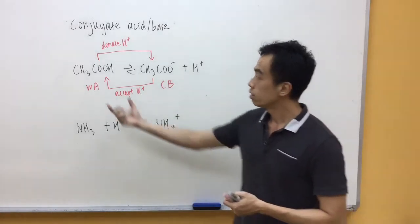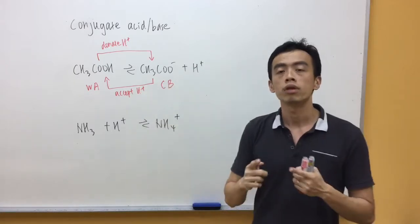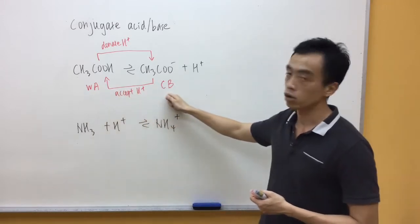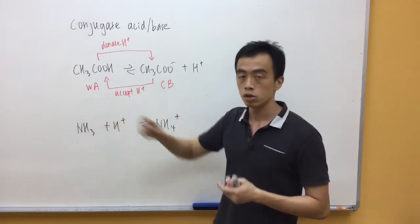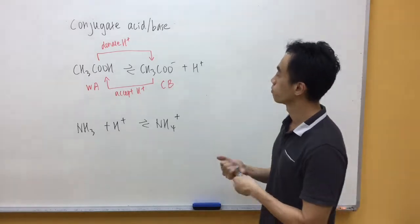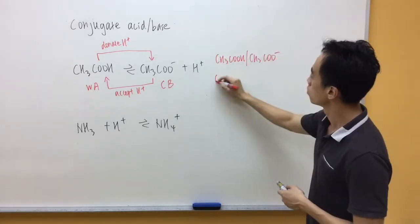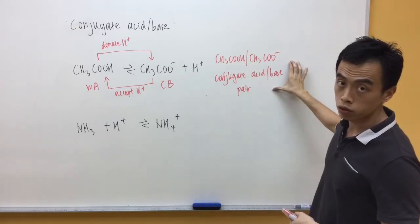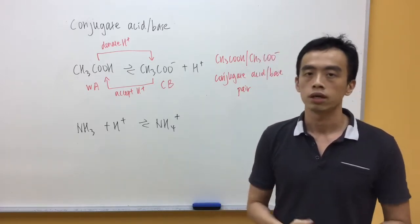Now, what this means is CH3COOH and CH3COO- they are related, which the difference between them is just a proton. And this weak acid releasing H+ will give me this conjugate base. And this conjugate base, accepting H+ will give me this weak acid. So, we are a couple. We call them a conjugate acid-base pair. Now, I'm mentioning this particular term, conjugate acid-base pair, because it will be useful for buffer solution, which we will discuss in another video.